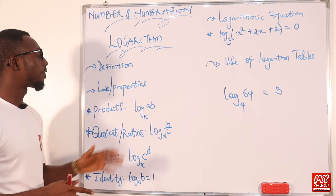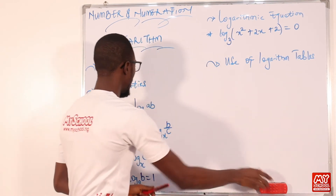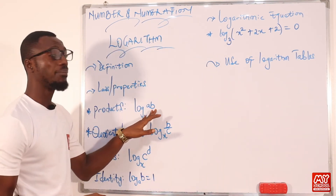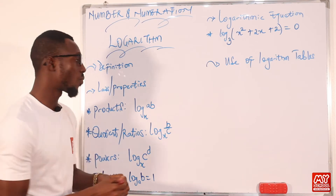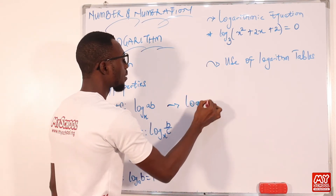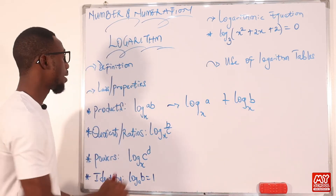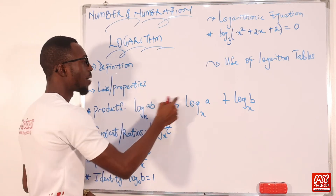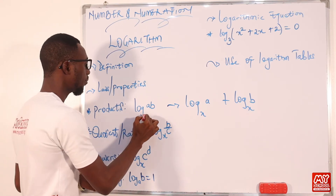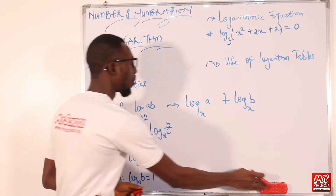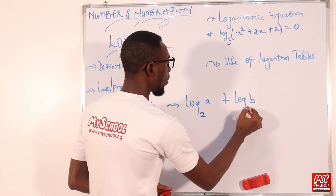The first law is the product property. We have log base x of (a × b). Since it's a times b, we change the multiplication to addition: log base x of a plus log base x of b. So for example, if the base x is 2, this becomes log base 2 of a plus log base 2 of b.